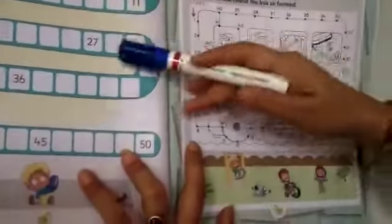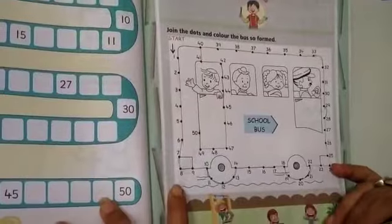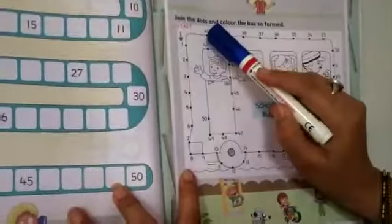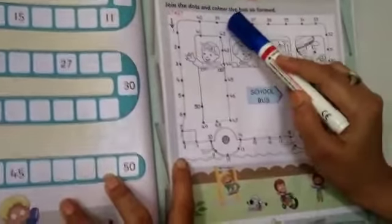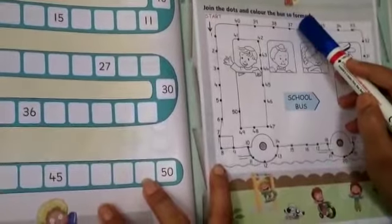Now we will see the next page, page number 76. Join the dots and color the bus so formed.